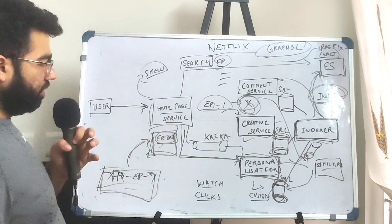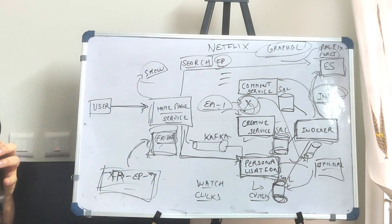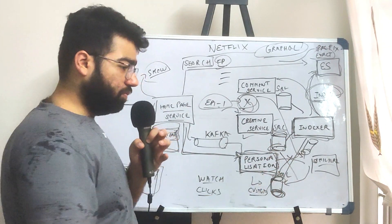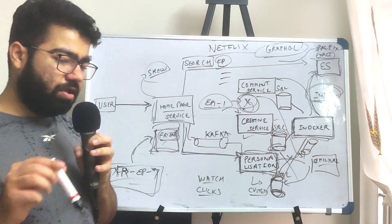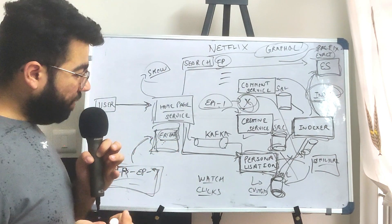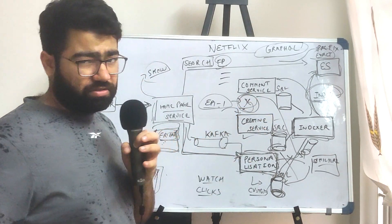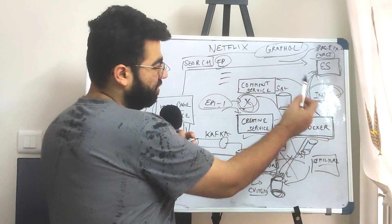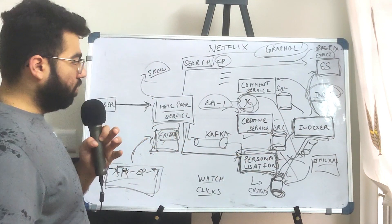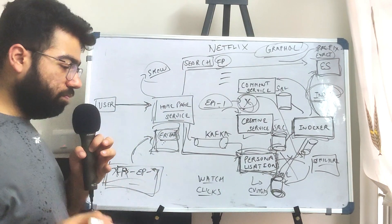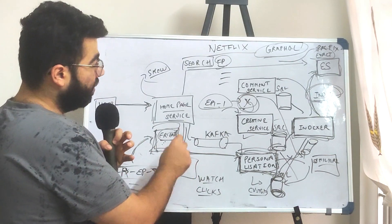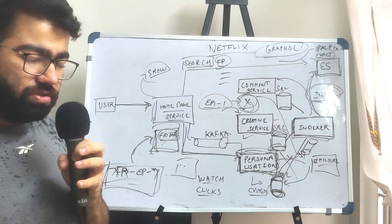Since search tends to be common for many users, you can remove the dependency on the personalization service if you don't want search results to be dependent on a particular user's recommendations — giving the same search results for everyone. But if you want personalized search, you would include personalization in the indexing. That's what happens when you go on the homepage and search. The next thing we will talk about is the actual streaming — what happens when you click on a title and how you are able to watch a video.